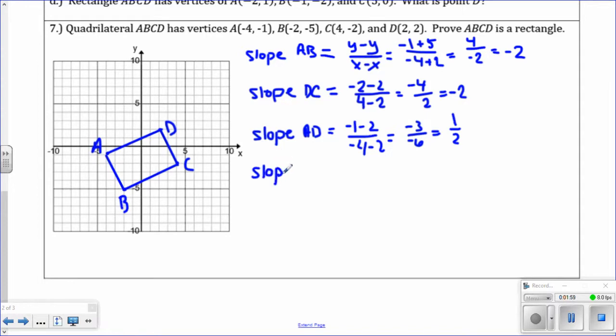The last side to find the slope is BC. If we do it correctly, we should get 1 half again. Y minus y, negative 5 minus negative 2 turns to plus, then negative 2 minus 4. We have negative 3 on the top, negative 6 on the bottom. Negative divided by negative reduces, and we get 1 half.